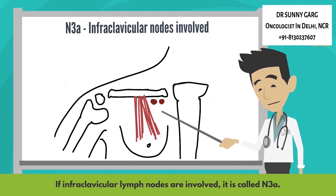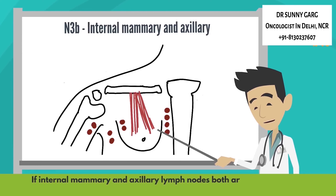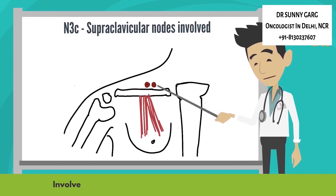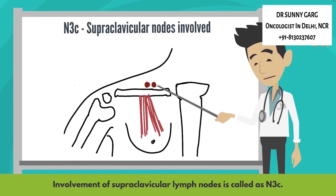If infraclavicular lymph nodes are involved, it is called N3A. If internal mammary and axillary lymph nodes both are involved — that is N2A and N2B both — then it is called N3B. Involvement of supraclavicular lymph nodes is called N3C.